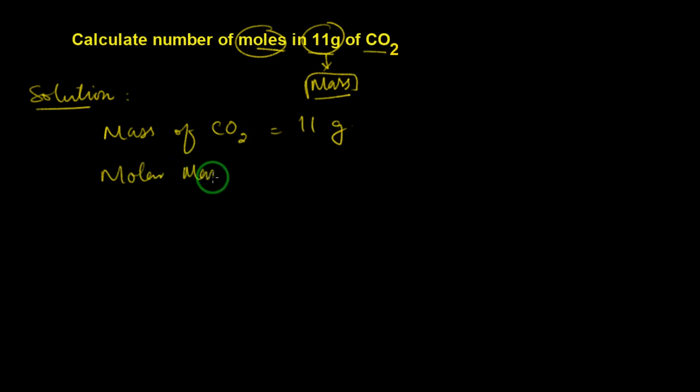Now we need to find out the molar mass of carbon dioxide. Carbon has atomic number 6 and mass number 12. Oxygen has atomic number 8 and mass number 16.